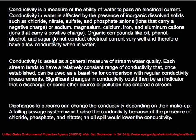Conductivity is a useful general measure of stream water quality. Each stream tends to have a relatively constant range of conductivity that, once established over a long period of monitoring, can be used as a baseline for comparison with regular conductivity measurements. Any significant change in this pattern could be an indicator that a discharge or some other source of pollution has entered a stream.